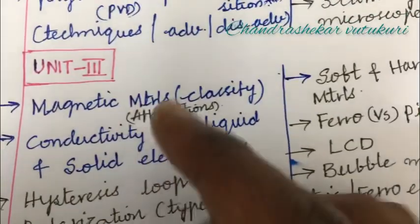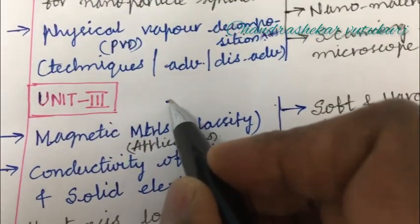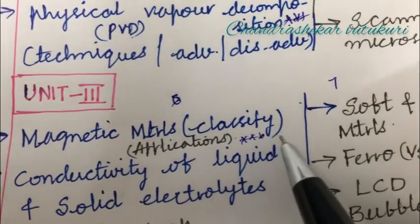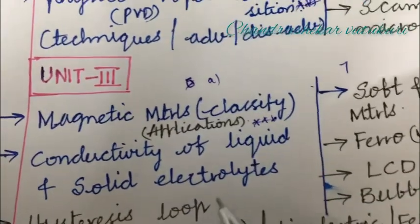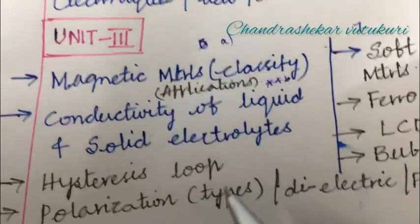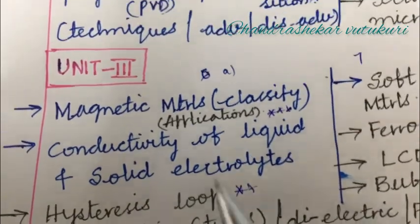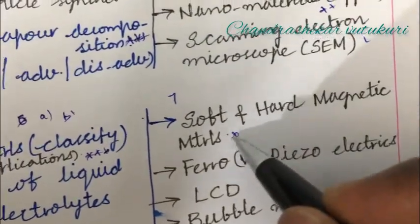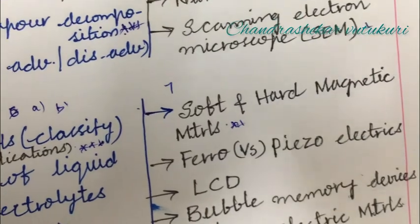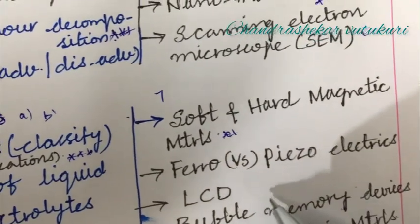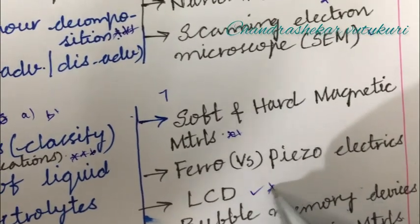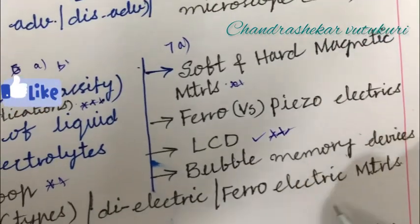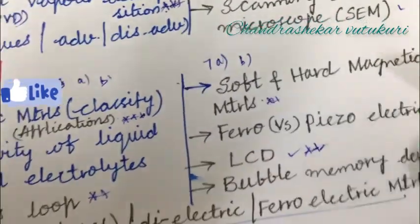Later, Unit 3, question number 6 and 7. Magnetic materials along with classification and application is a topmost question which may occur in 6A and as a short question. Conductivity of liquid and solid electrolytes, hysteresis loop, and polarization types are also topmost questions from which we can expect 6A and 6B. Soft and hard magnetic materials is a topmost question which may occur in short or long questions, along with their differences. Ferroelectric versus piezoelectric, and LCD along with neat sketches may be short or long questions. Bubble memory devices, dielectric or ferroelectric materials may be short questions. This is all about 6AB and 7AB.